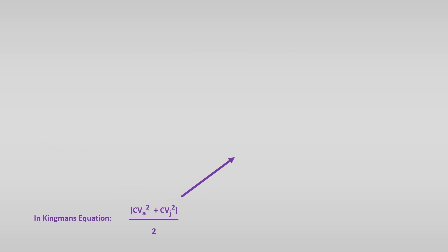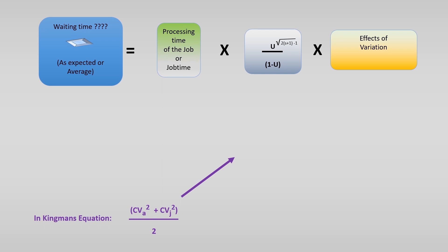So, let's fill this in the formula we have. This is the job time multiplied by the effect of occupation and multiplied by the effect of variation.